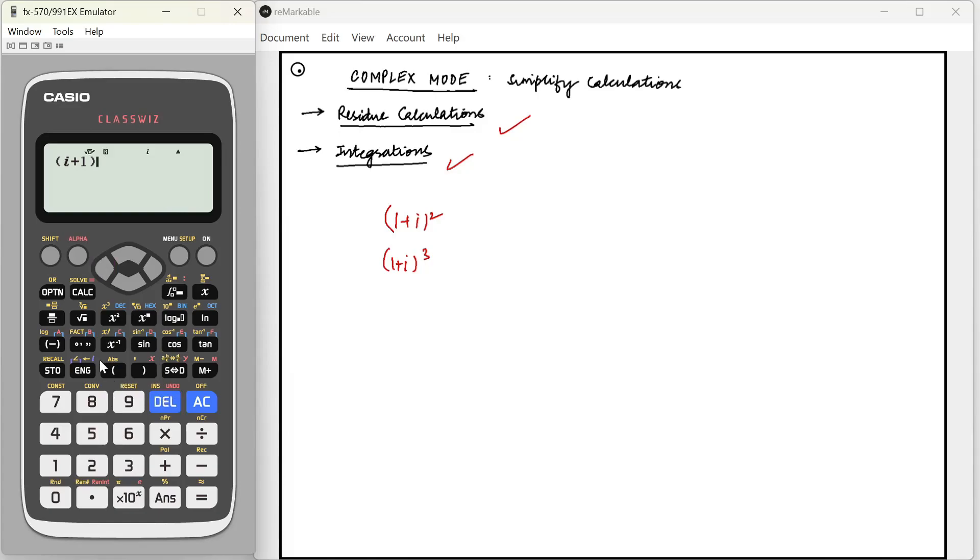For example, one plus i into two plus i. That will give us the answer directly, we don't have to calculate during the exam.